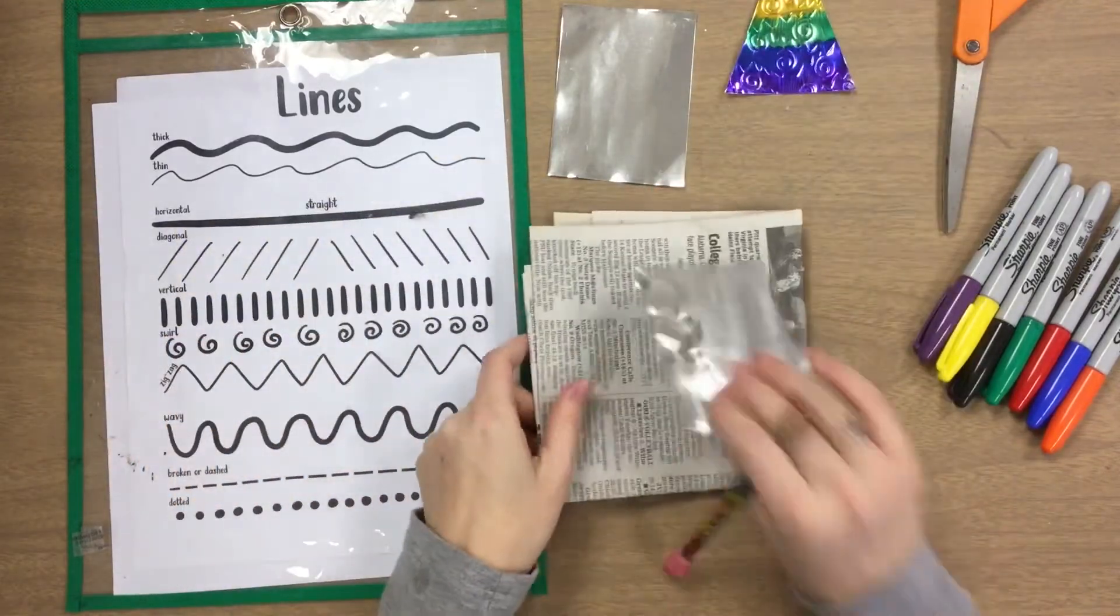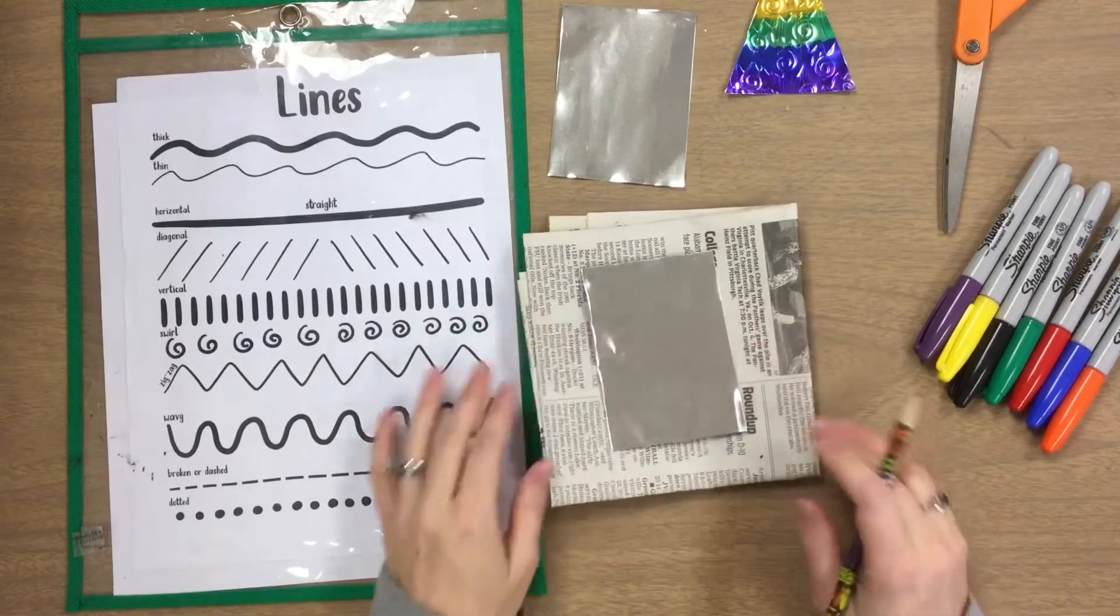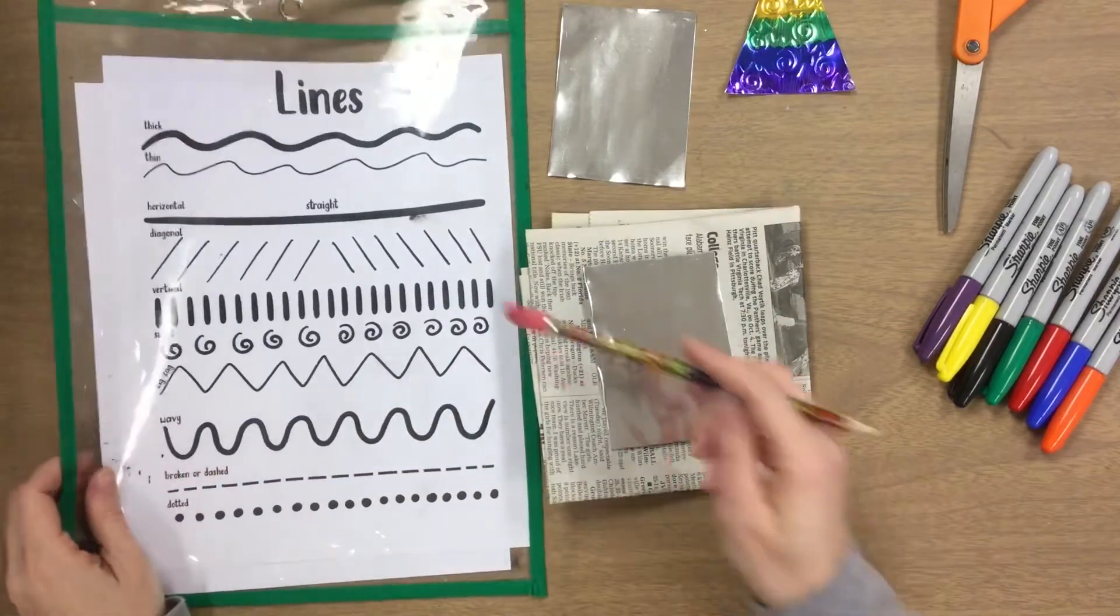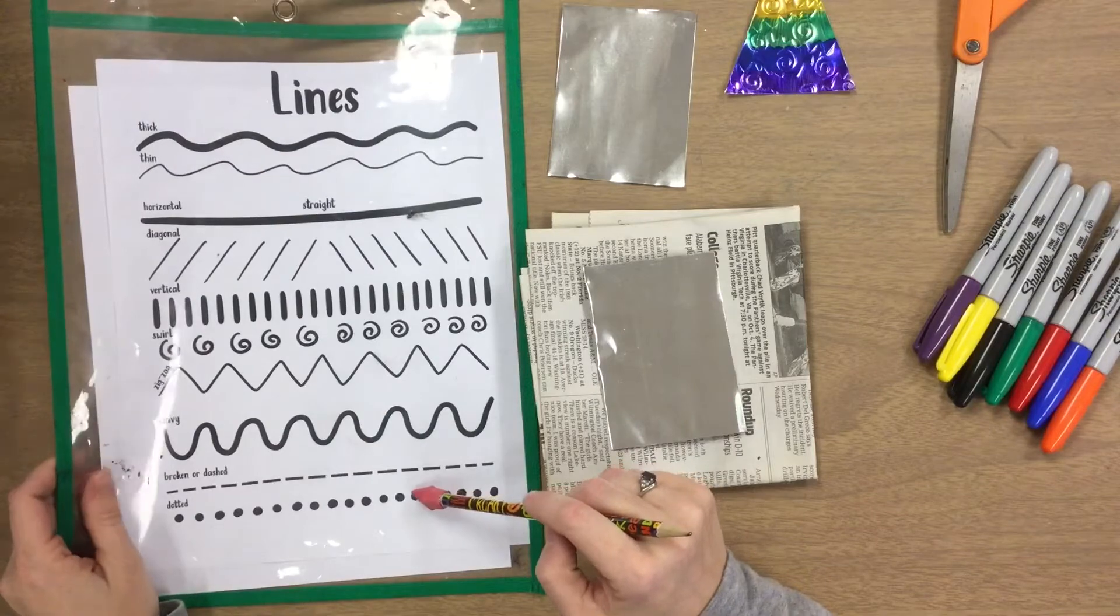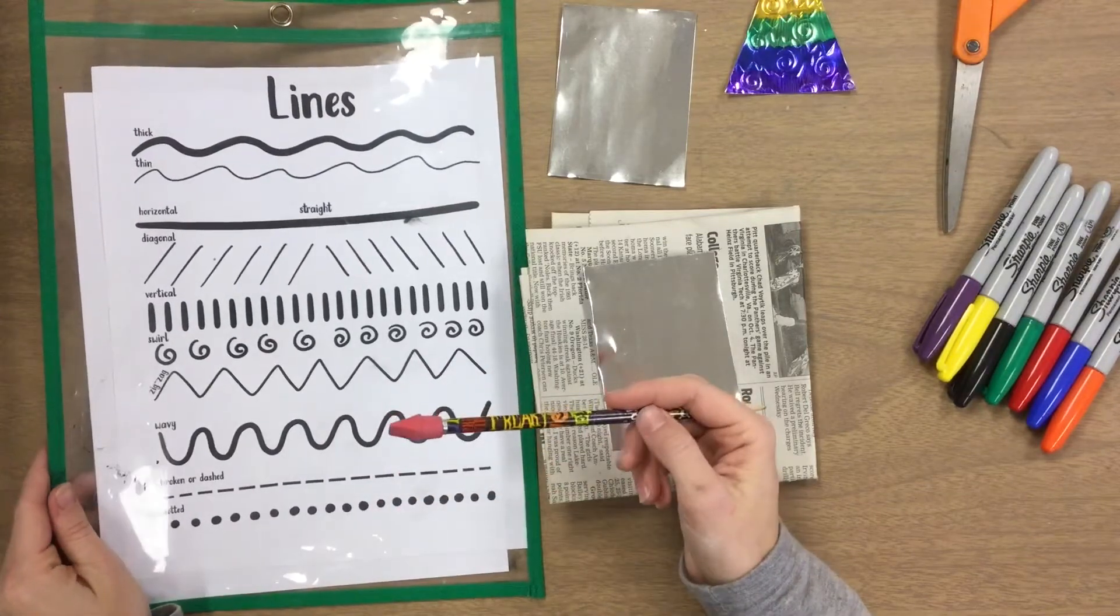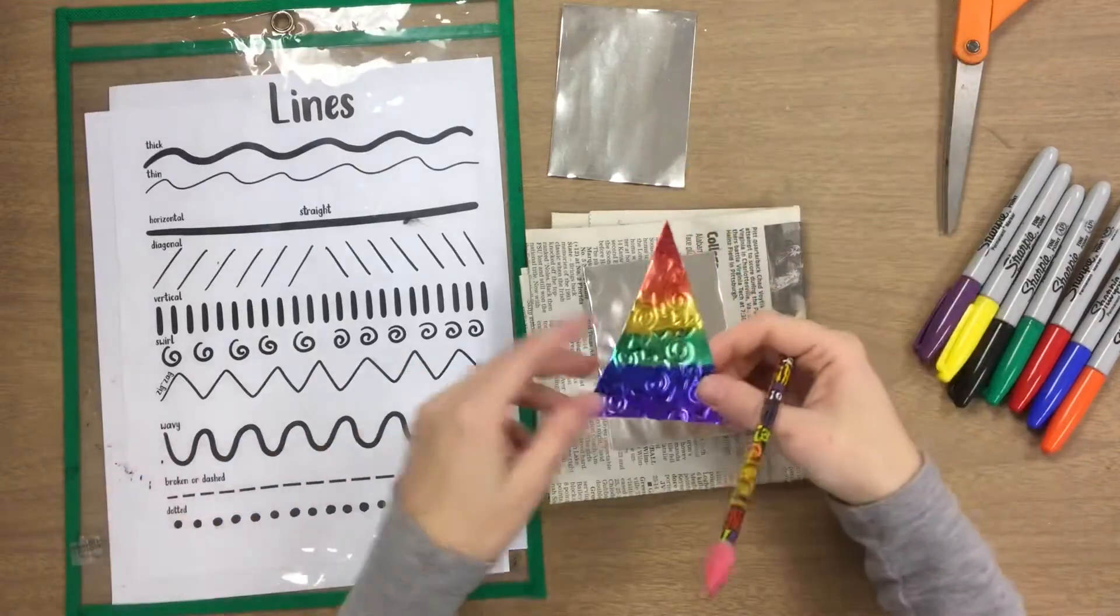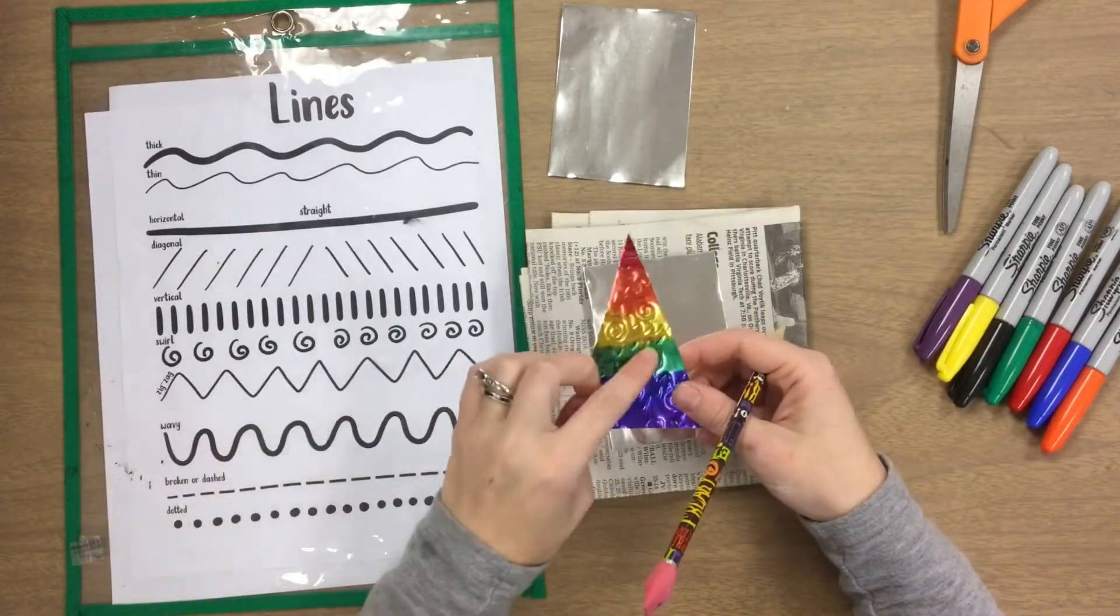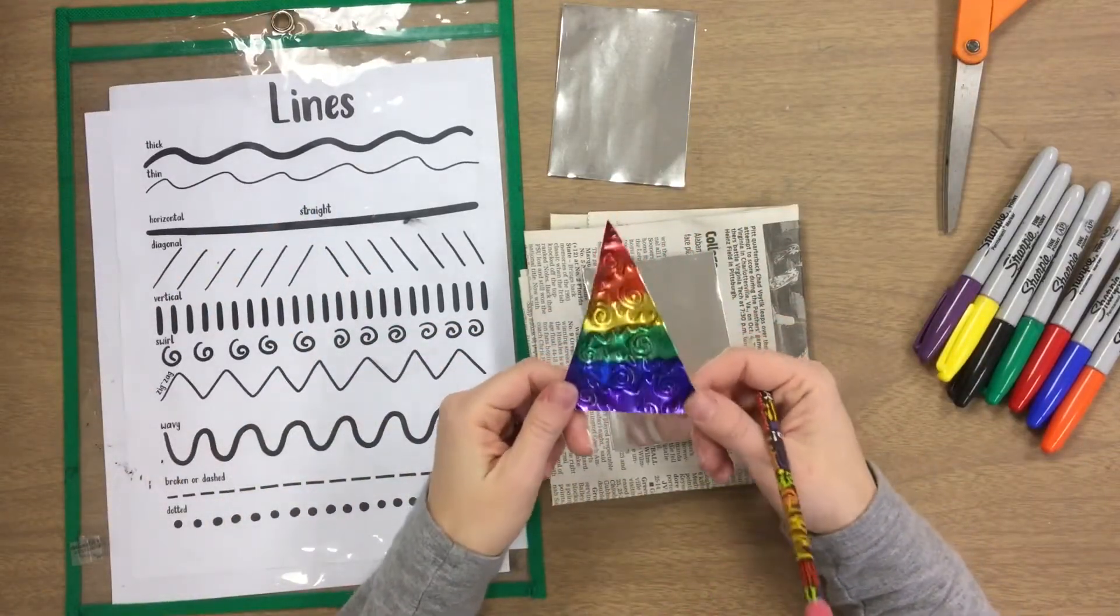Make sure you're working on top of the newspaper that you are given. There is this line sheet that we've used in a couple different classes to help you with some ideas. If you can't think of any ideas for your trees, you can always just decorate it with some lines.